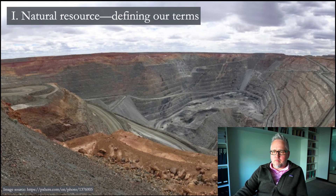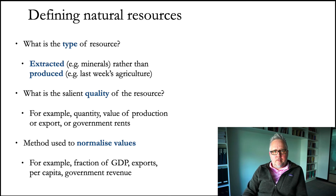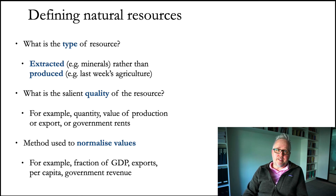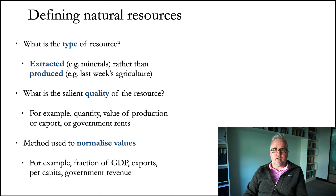Let's connect this to the resources we're going to be looking at for the rest of this week. When we define resources, there are two basic types: extractive and produced. Extractive resources are minerals like gold, silver, copper, coal — things that we take out of the ground — while produced resources are ones that human beings can make, like wheat, corn, rice, soybeans — the things we talked about last week. So that's the basic differentiation: ones we extract from the ground versus the ones we produce by effort and resources that we put into the ground.